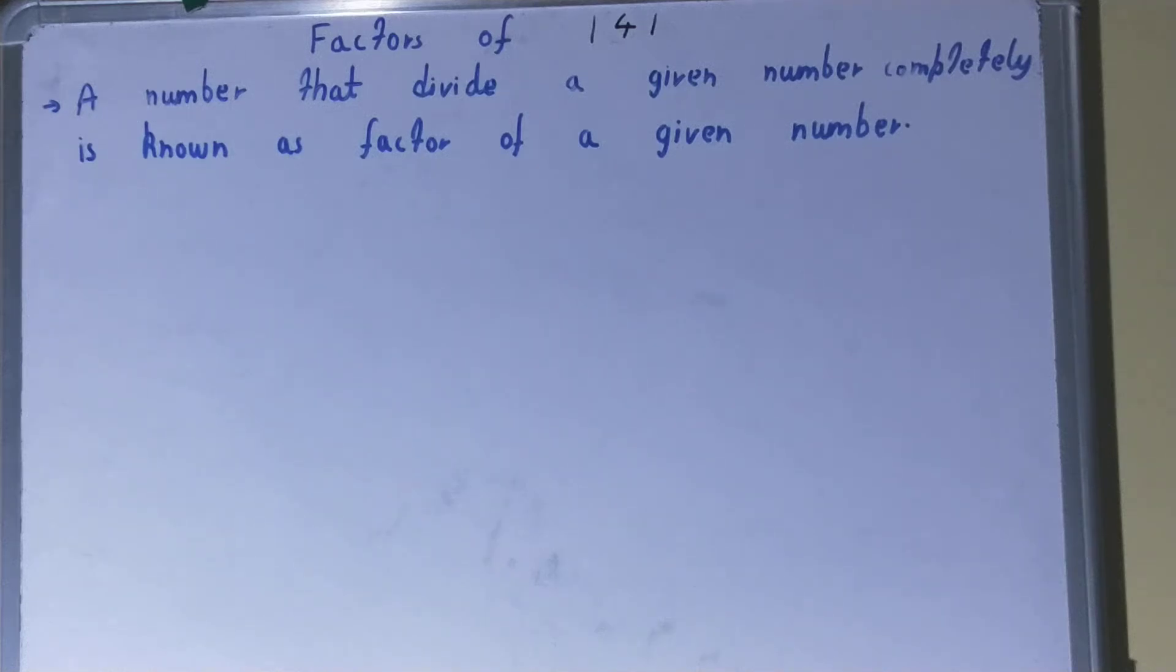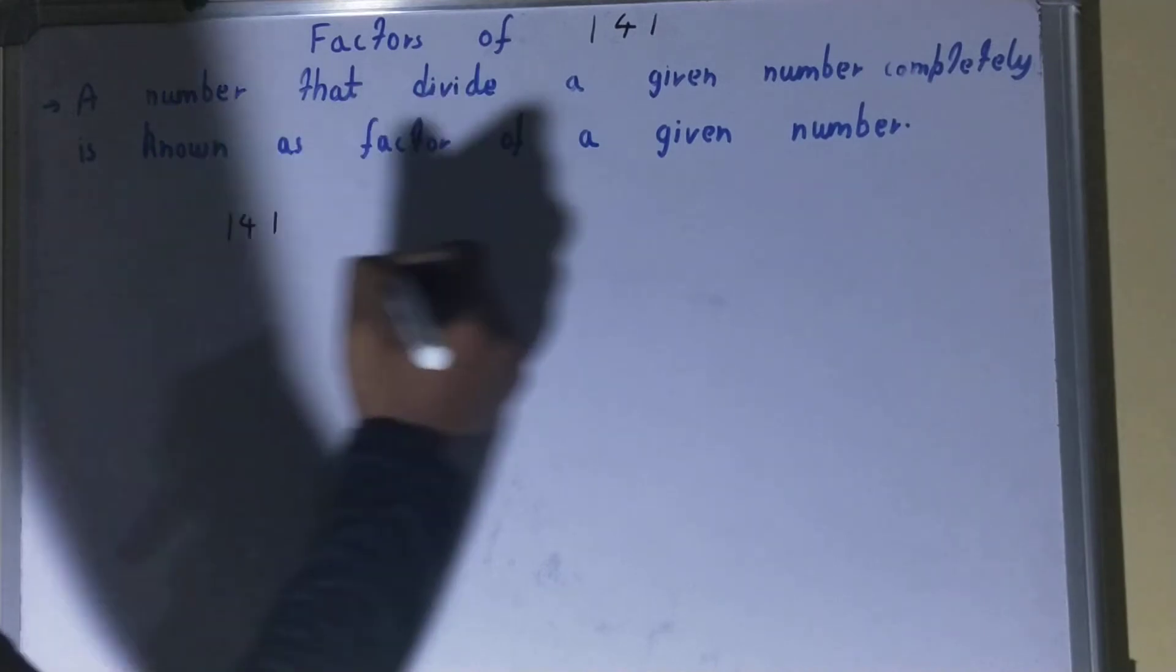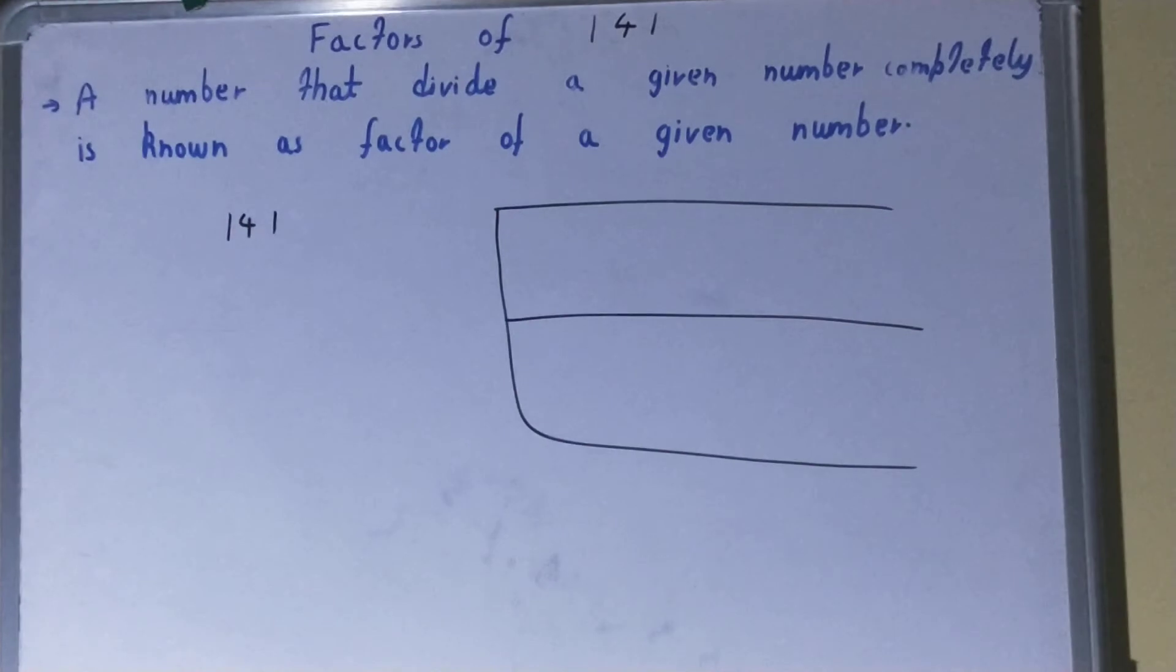Hello friends, and in this particular video I'll be helping with the factors of the number 141. So let's start. To find it out, you need to write the number like this and you need to draw it like this. Once you are done with that, what you need to do is you need to start with the lowest natural number.